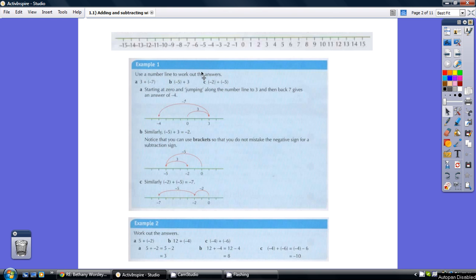For example, when we've got 3 and we're adding on a minus 7, start off at 3, and then we're adding on a minus 7. So go back 7: 1, 2, 3, 4, 5, 6, 7, taking us to minus 4.